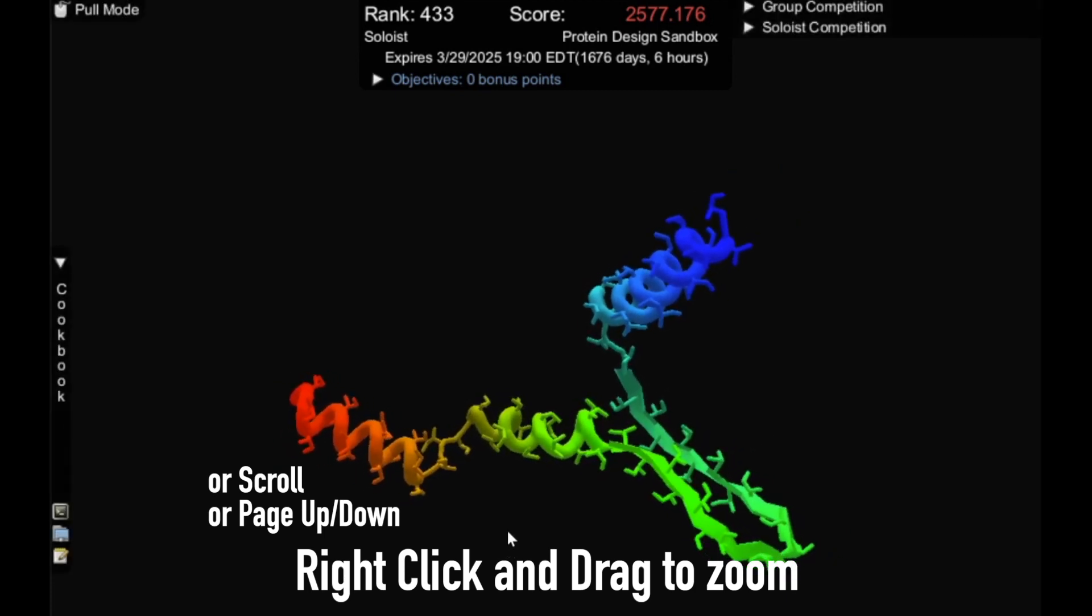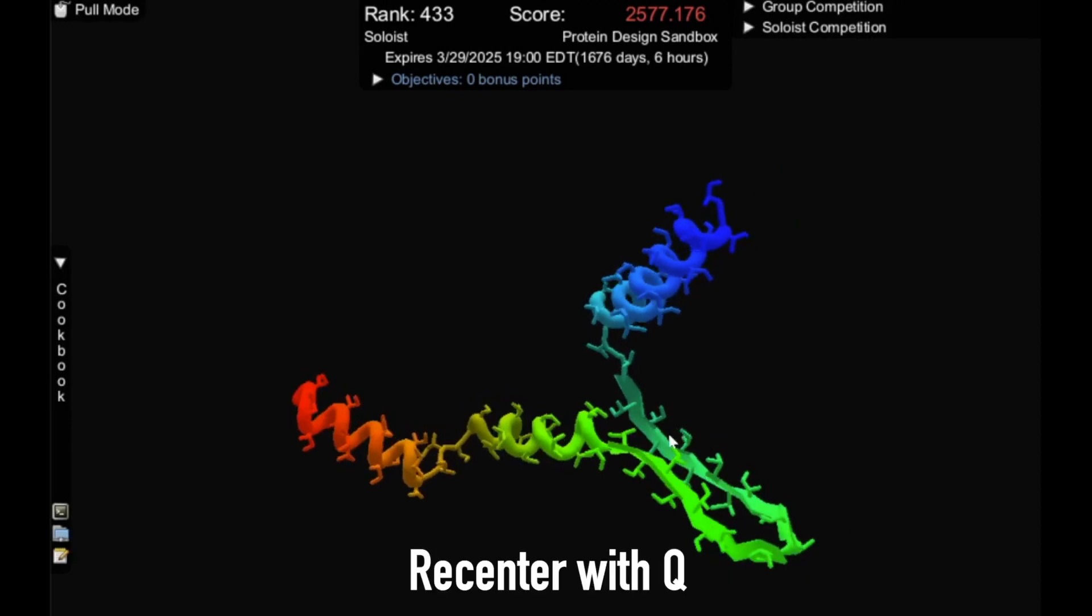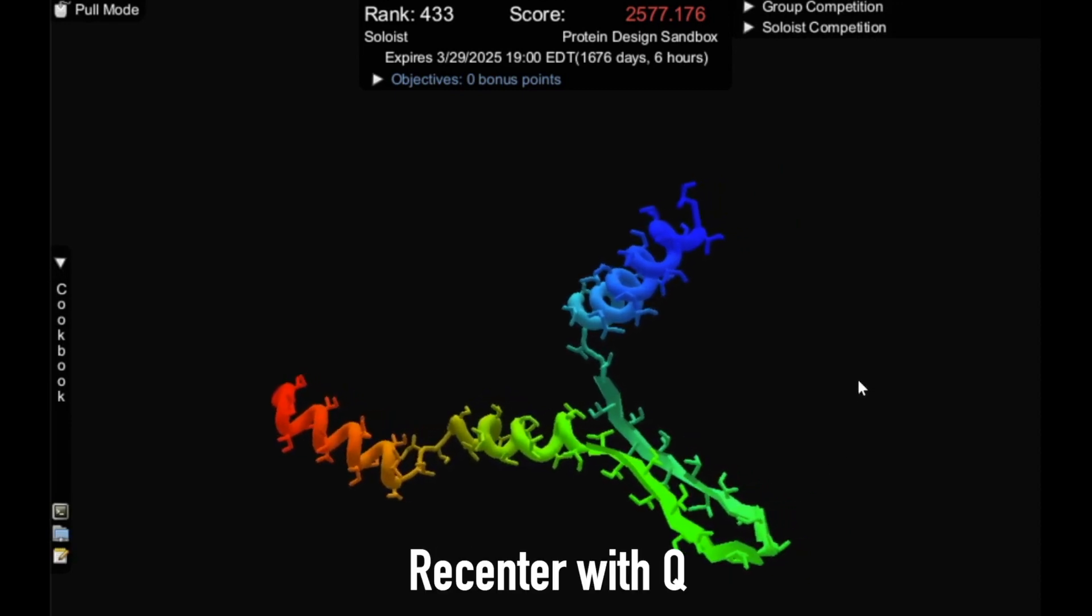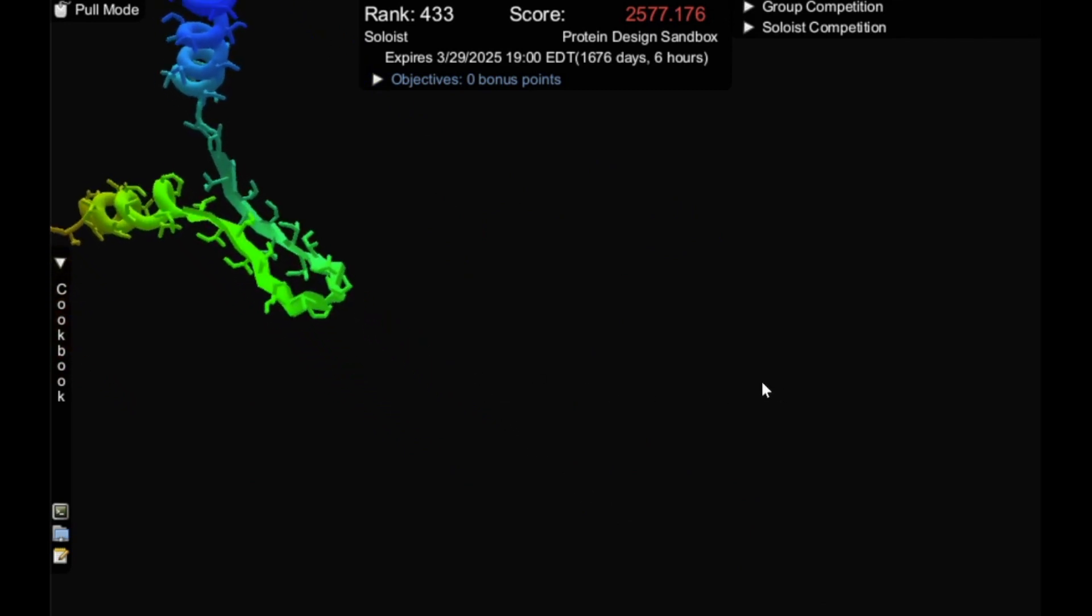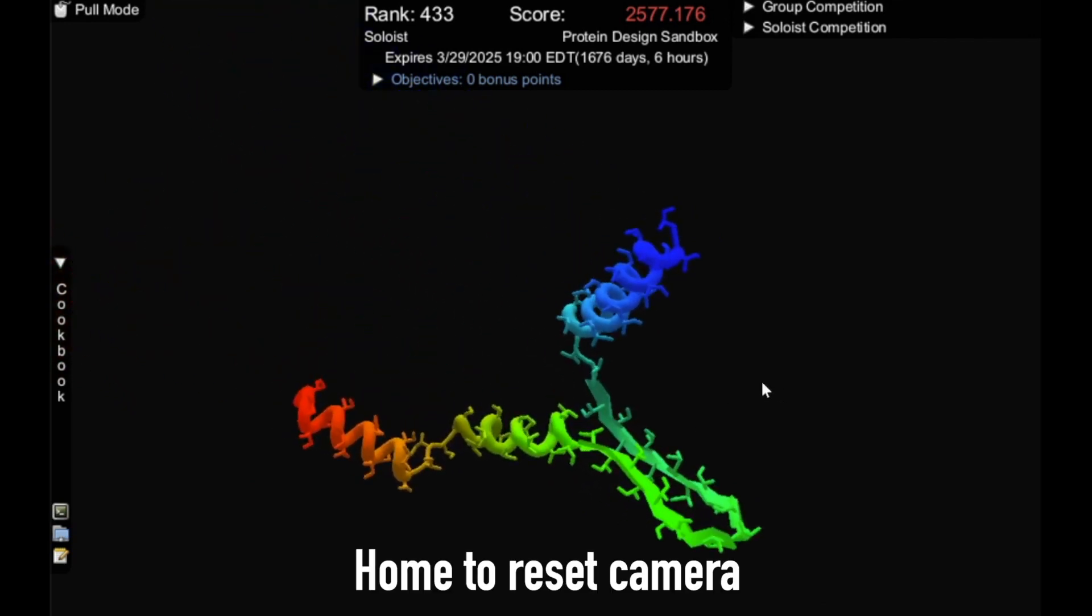You can change these controls in the general options. You can recenter your protein by pressing Q on the background, and if you ever want to reset the camera completely, press home to go back to its original position.